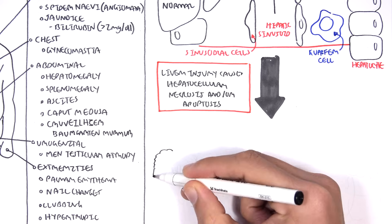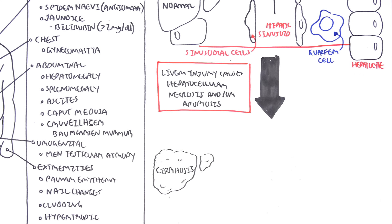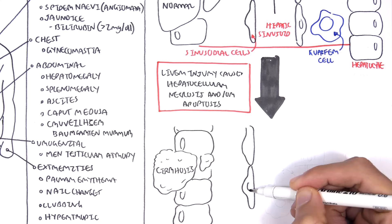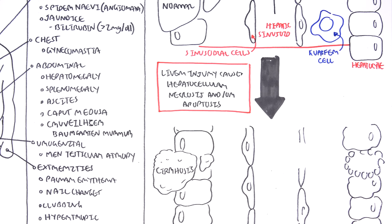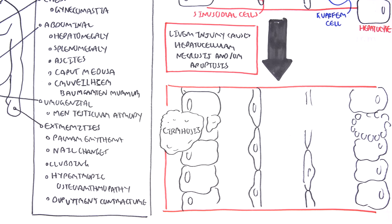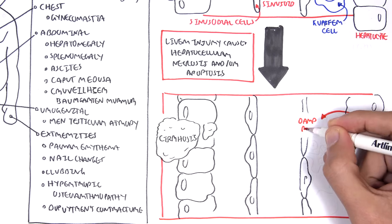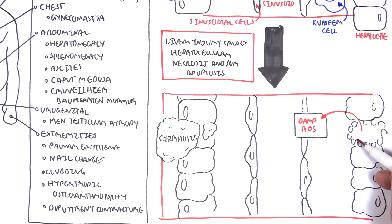As a result, we see these changes in the liver. This is an advanced stage, which is cirrhosis already. The dead liver cells release damage associated molecular patterns, DAMPs, as well as reactive oxygen species.